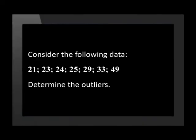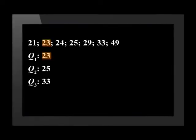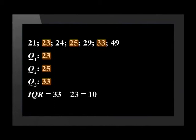Let's look at an example calculating outliers and representing them on the box and whisker plot. Consider the following data: 21, 23, 24, 25, 29, 33 and 49. Determine the outliers. Our first step is to find the interquartile range. The lower quartile is equal to 23. The median is equal to 25. The upper quartile is equal to 33. The interquartile range will be equal to 33 minus 23, which is equal to 10.